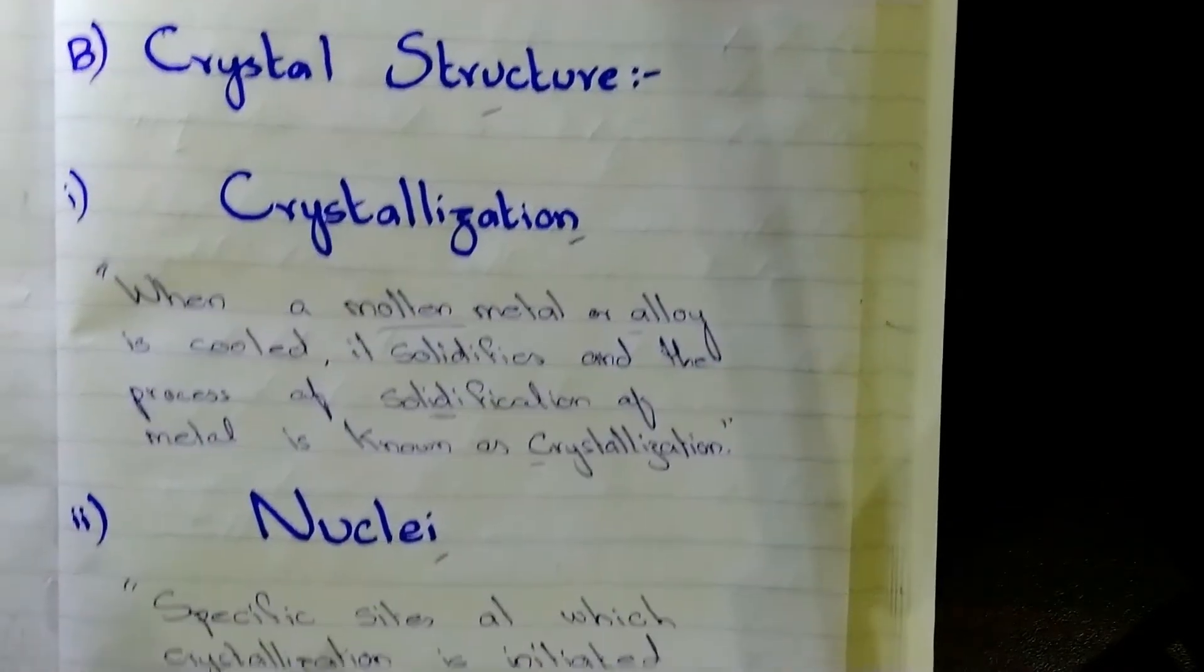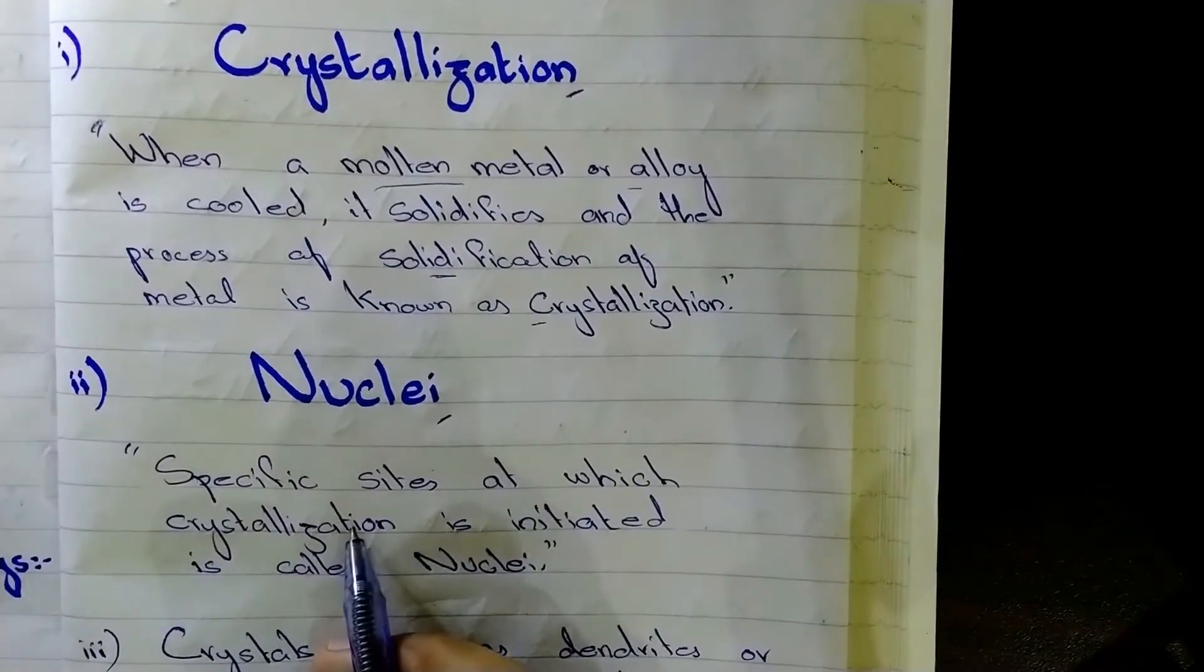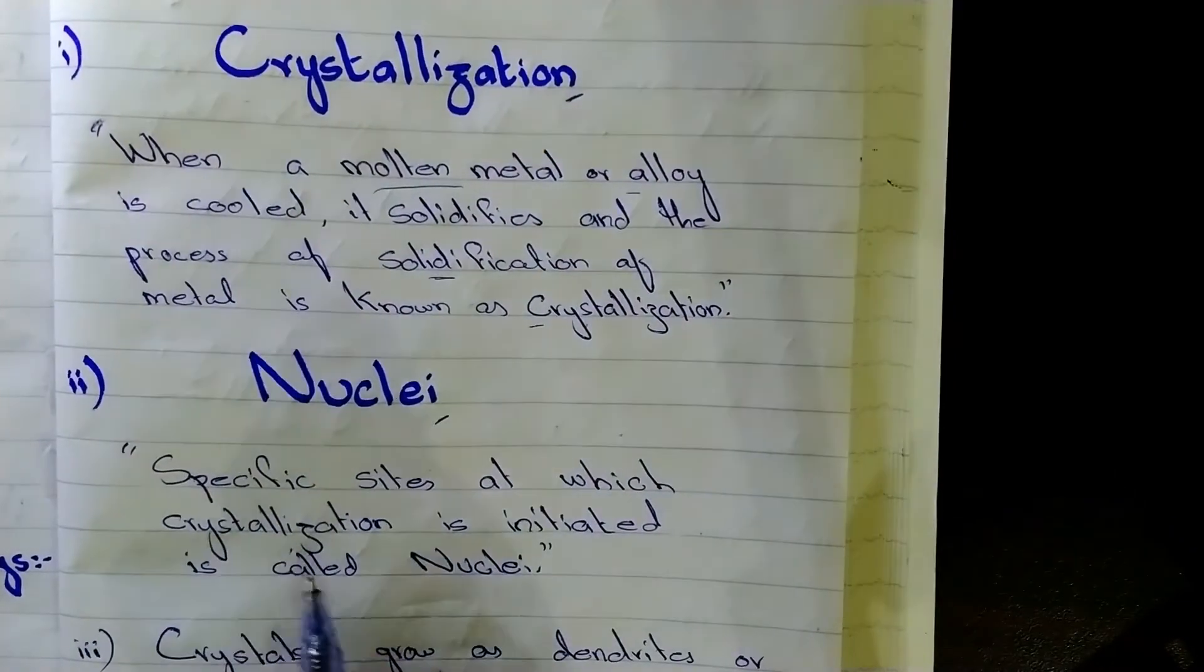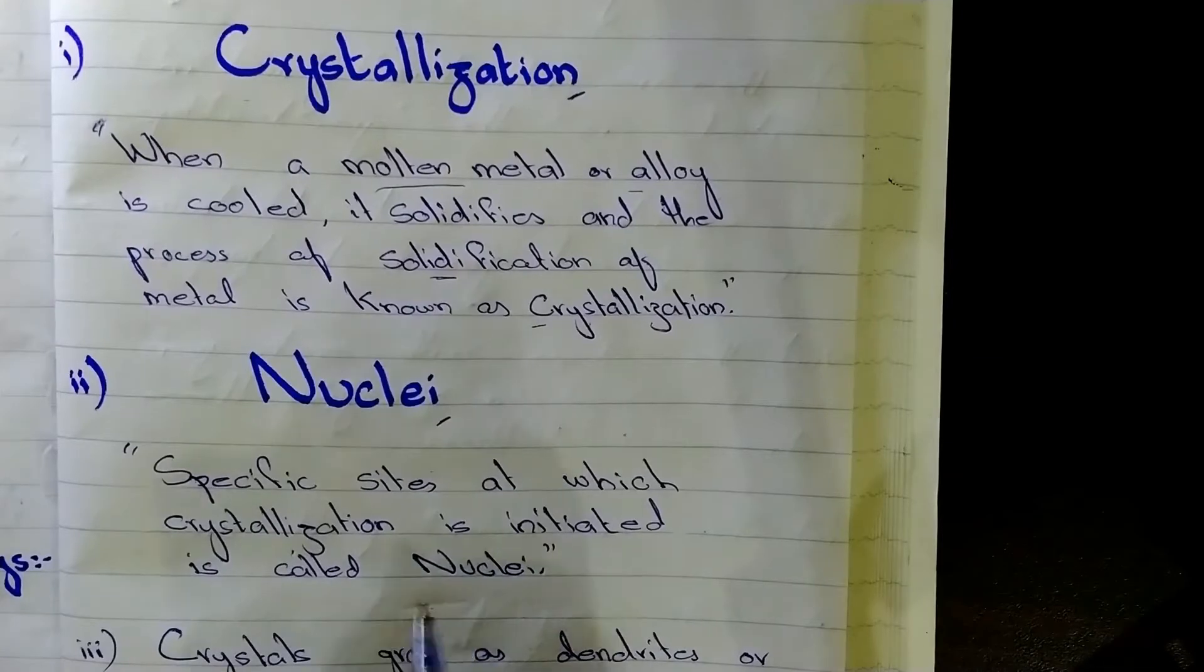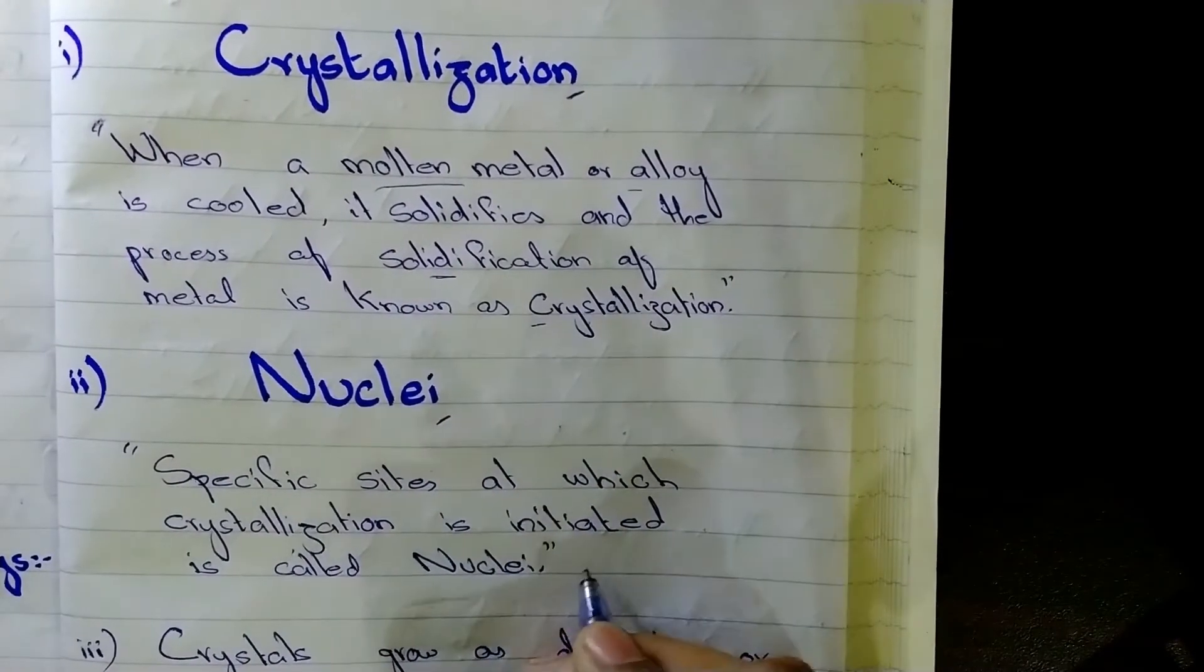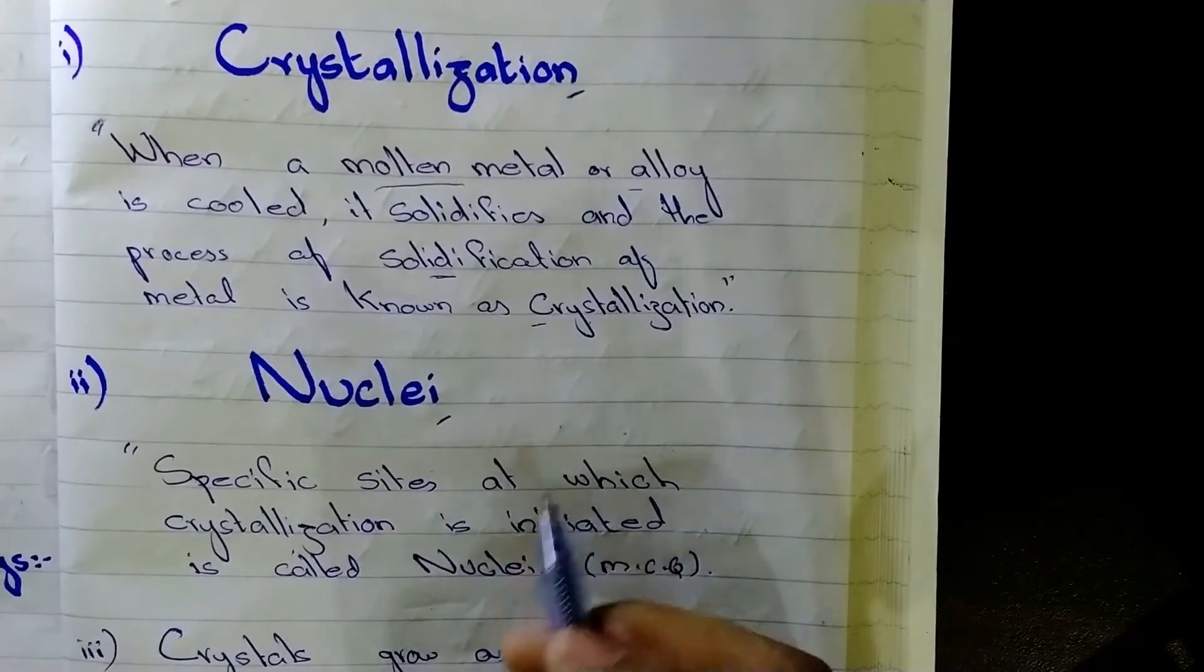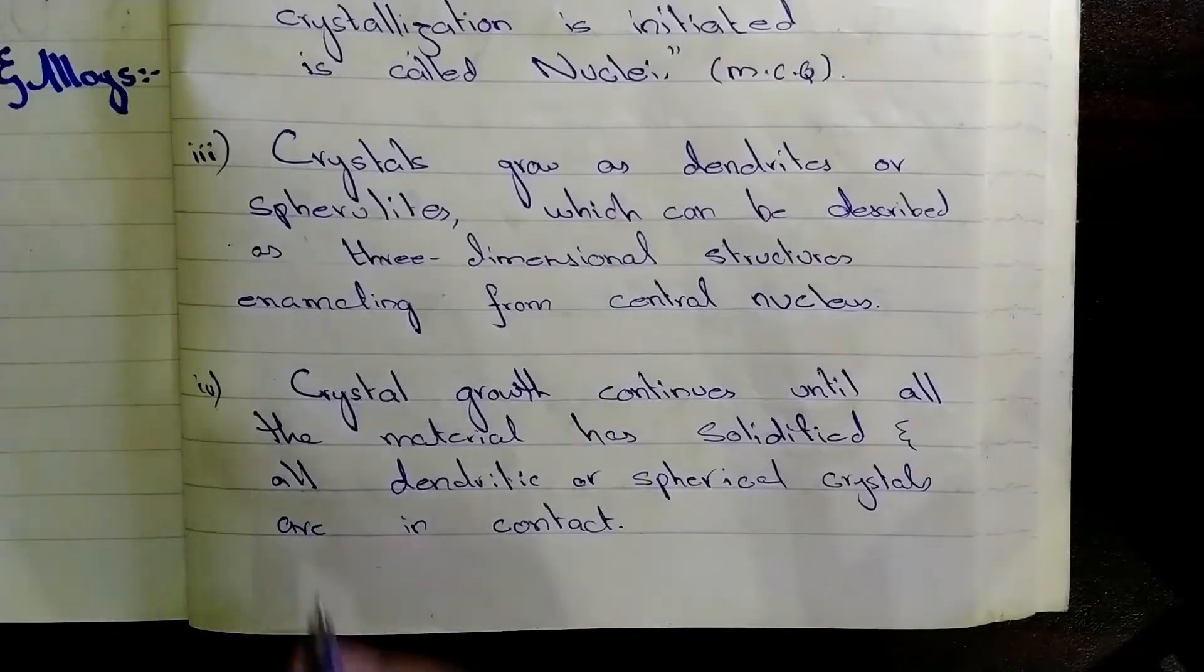And the second definition of nuclei is specific sites at which crystallization occurs or is initiated is called nuclei. These both definitions are frequently asked in MCQs. You guys can copy it from my videos.